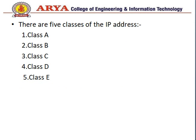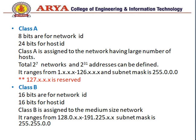Now let's discuss the classes of IP addresses. There are five main classes: A, B, C, D, and E. In Class A, we have 8 bits for the network ID and 24 bits for the host ID. Class A is generally used for large networks with a large number of hosts. The total number of networks is 2 to the power 7, which comes from the total network bits minus 1, because 1 bit in Class A is reserved — that is 0.